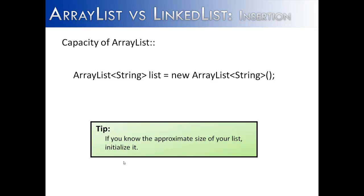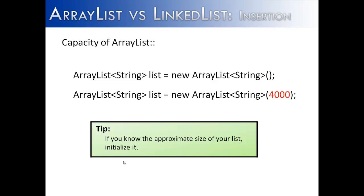There is a way to reduce this problem: if you know how large your list is going to be, you can initialize the capacity. If we don't initialize it, it starts at 10 and we'll occasionally run into that big O of n as it grows. But if we know roughly how many items will be in the list — say 4,000 — we can initialize it that way and avoid hitting O(n) during resizing.